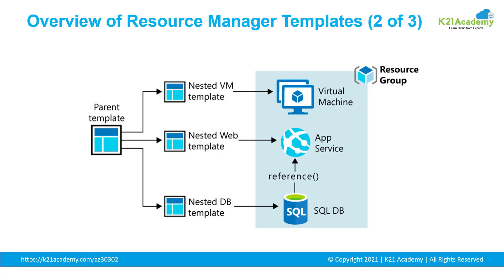The following image shows how to deploy a three-tier solution through a parent template that includes three nested templates. There is a parent template and you have nested templates inside that — a VM template, web template, and DB template — which are referenced in the parent template and invoked. When I run my ARM template, the VM template is invoked to create the virtual machine, followed by the web template to create the app service, and so on.